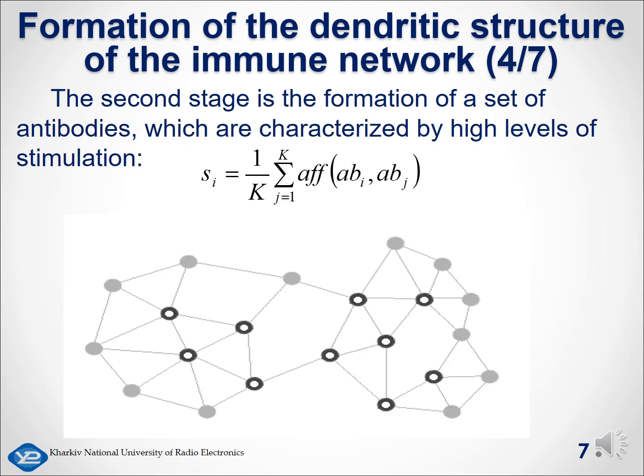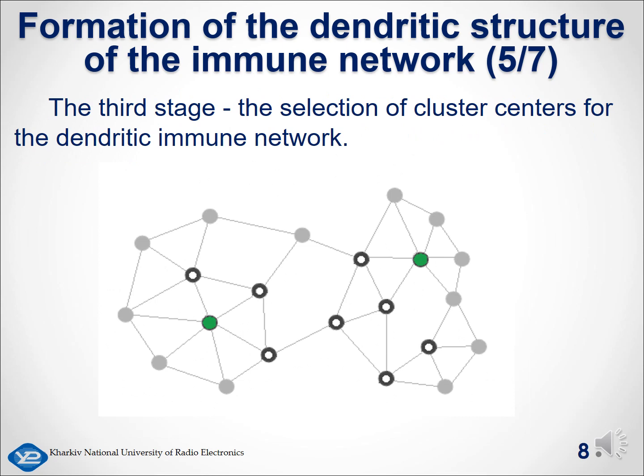At the second stage, after the formation of the K-connected network of antibodies, the level of stimulation of each antibody is calculated based on its affinity with other immune objects forming the network. Based on the value of the level of antibody stimulation, the candidates for the centers of the clusters are determined, which are shown on this slide with vertices in a dark gray outline. From all the candidate antibodies, the antibody characterized by the maximum number of connections with other antibodies of the network and the maximum level of stimulation is selected for the center of the clusters. The objects selected for the center of the formed clusters are marked in green, shown on this slide. It should be noted that in this case the formation of two clusters is expected in the clustering process.